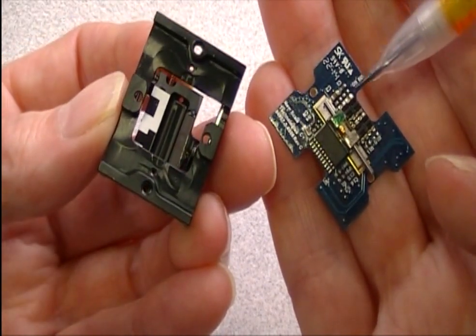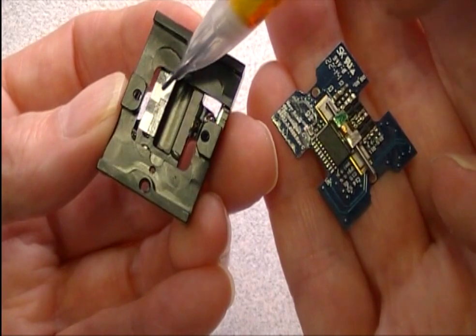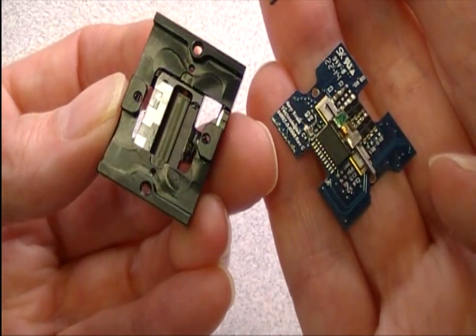Absolute encoding is built in, so there's no need to re-home the carriage on power-up in order to know the stage's exact absolute position.